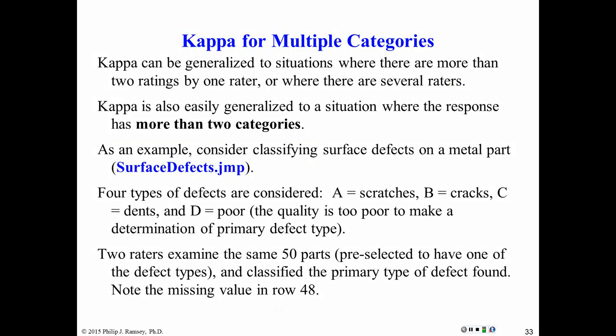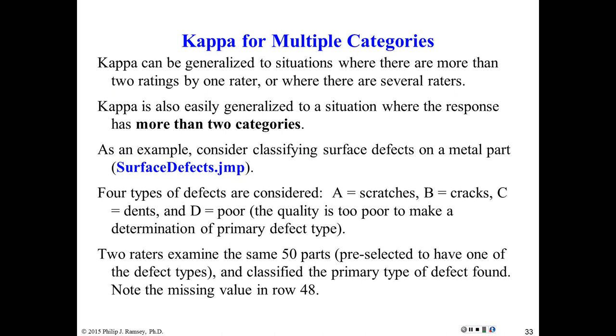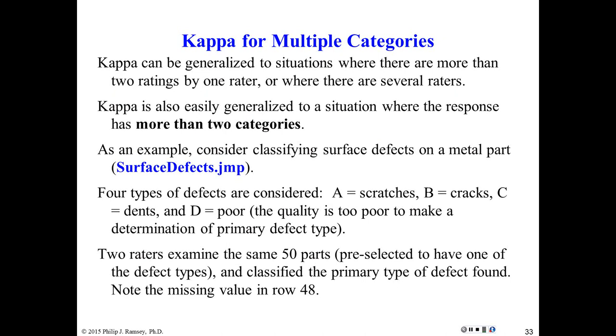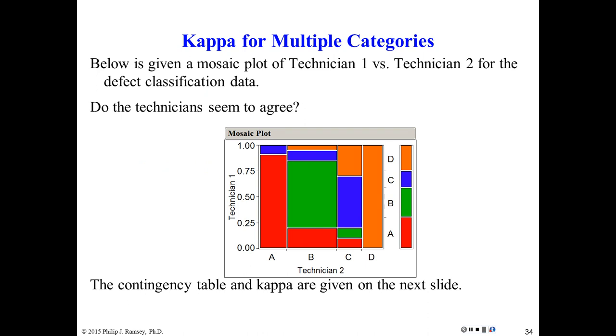I'll show you one more example because you can use the kappa statistic and you can do agreement studies with more than two categories. In fact, you can do expert reevaluation with more than two categories if you want to. In this case, we have a study called Surface Defects. There are four types of defects that can occur on the surface of a part: scratches, cracks, dents. And D is a category that means the quality is so bad we can't really determine the exact primary defects. So we're just going to call them D. Again, we have raters do an agreement study with 50 parts. And in each part, please classify the primary defect that you found.